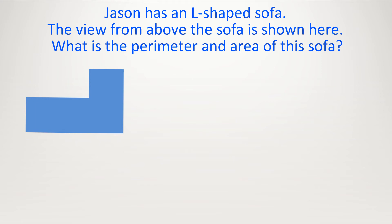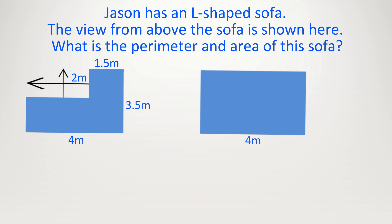Jason has an L-shaped sofa. The view from above the sofa is shown here. What is the perimeter of Jason's sofa? From this L-shape, a nice way to do the perimeter is to push this side up and then the 2-meter side across. When we do this, the perimeter is the same as a rectangle. We have 4 on the bottom and 4 on the top; 3.5 on the right and 3.5 on the left. So 4 plus 4 is 8, and 3.5 plus 3.5 is 7, giving 8 plus 7 equals 15 meters.